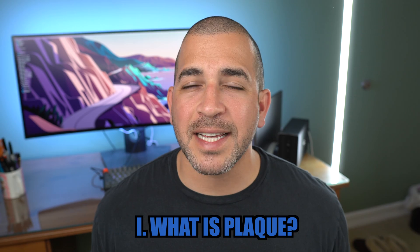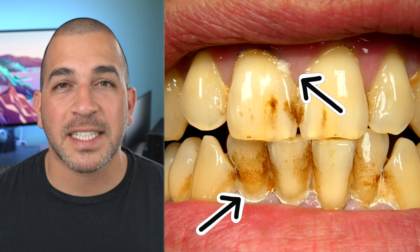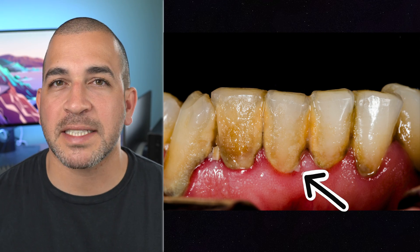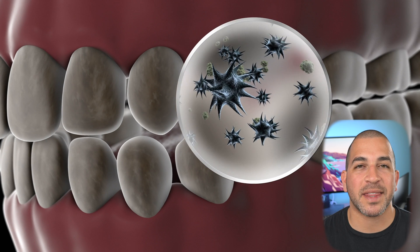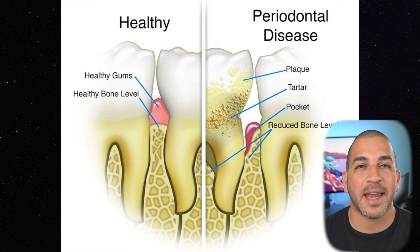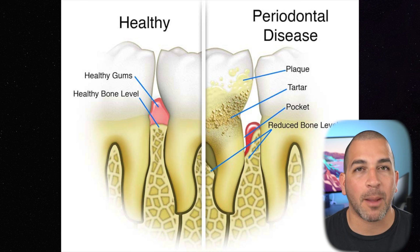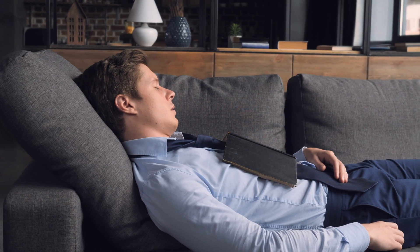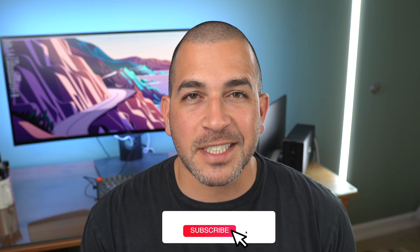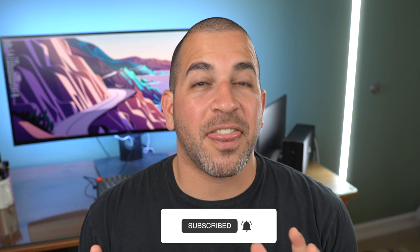So what is plaque? Plaque is a soft, sticky, colorless film of bacteria that gets stuck on your teeth and underneath your gums. It develops when the bacteria in your mouth mix with the sugary and starchy foods that you eat. This bacteria, in combination with acids and carbohydrates, creates the sticky film we call plaque. This is very common — if you went to sleep without brushing your teeth, you wake up, run your tongue on your teeth, and you have that fuzzy feeling. That's plaque.